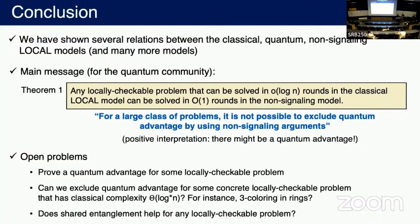Question: In general, what is the complexity for locally checkable problems? Answer: It really depends on the topology. For a ring classically, there are only three classes: constant, log*, and linear. Depending on the topology you can have more classes, but typically only a constant or small number of complexity classes. Most practical problems have very low complexity — log n or log* n — really very low for many practical problems.